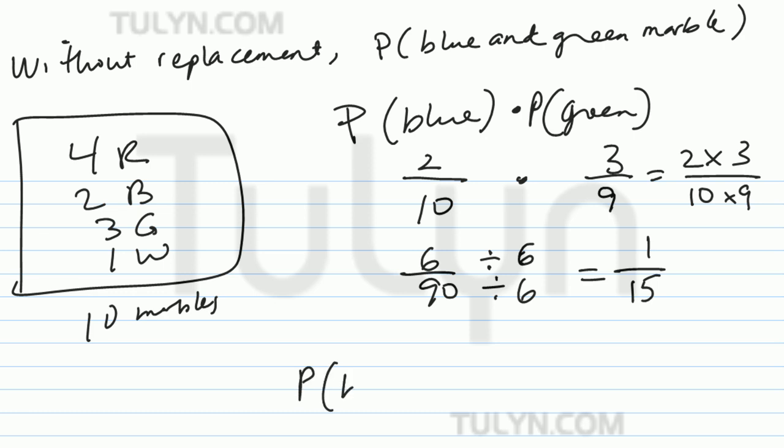So probability of blue and green marble will be 6 over 90—6 out of 90, or 1 out of 15.